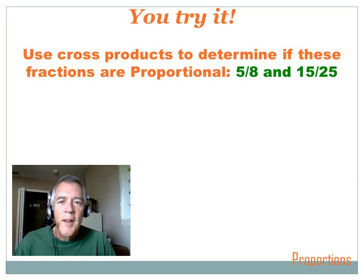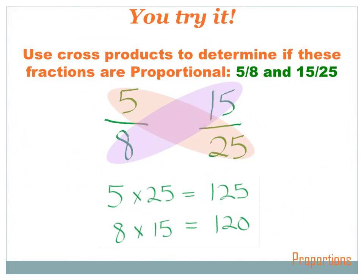Now you try this one — hit the pause button, do the problem, and then hit the forward key to move on to the answer. Use cross products to determine if these fractions are proportional: five eighths and fifteen over twenty-five. The first cross product is five times twenty-five, which equals one hundred and twenty-five. The second cross product is eight times fifteen, which equals one hundred and twenty. One hundred and twenty doesn't equal one hundred and twenty-five, so these two fractions are not proportional.